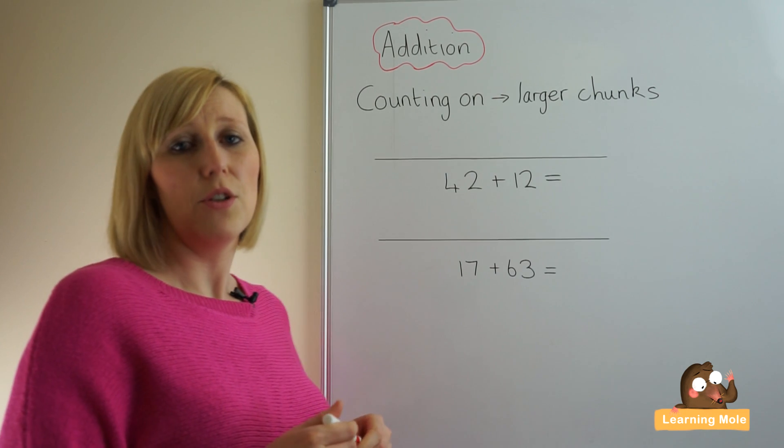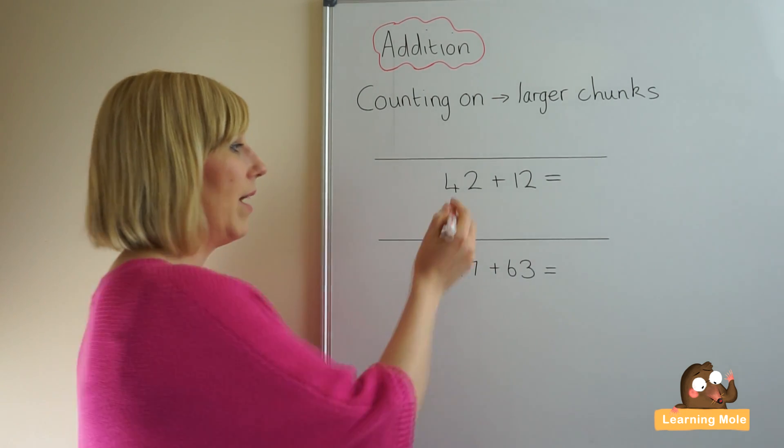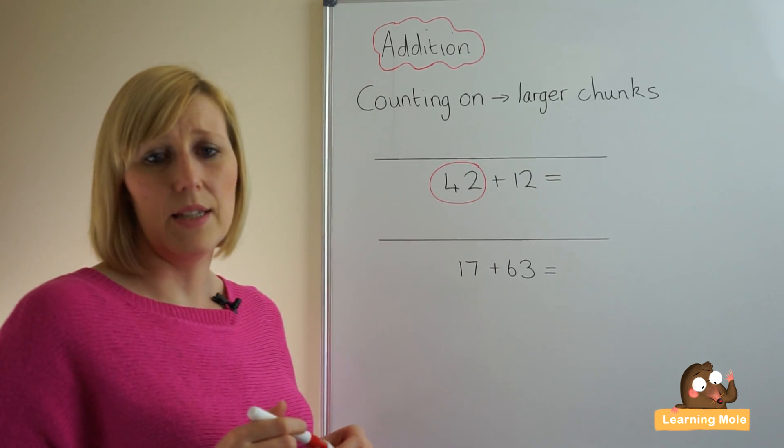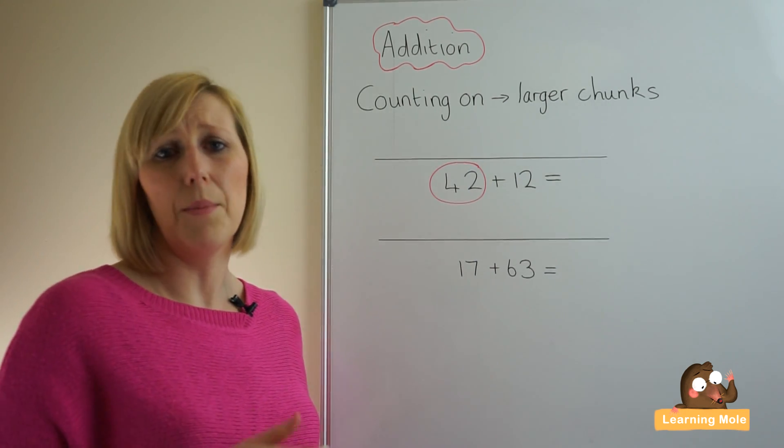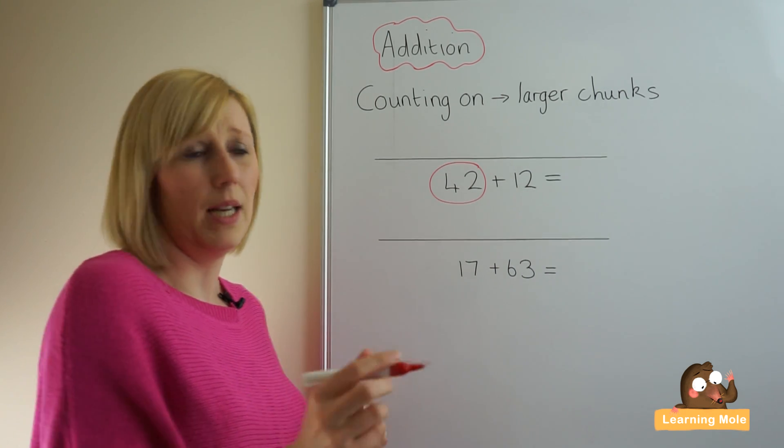So the first step is we're going to reorder the calculation. We're going to find which is the biggest number, so we're identifying 42 as the largest number in this calculation. This is essentially the number that we will put in our heads, and this is the number that's going to go at the beginning of our number line.